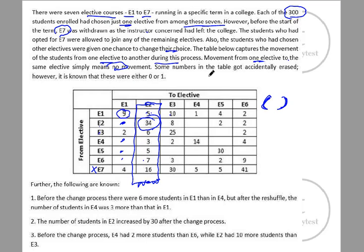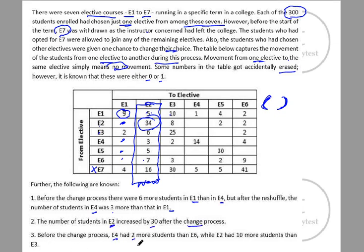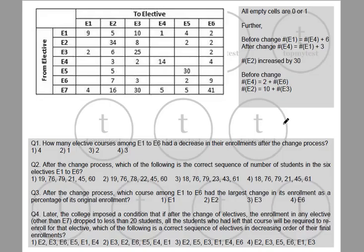Some numbers in the table were accidentally erased. However, it is known that these were either zero or one — they cannot be anything else. Further conditions: before the change, e1 had six more students than e4; after the reshuffle, e4 had three more than e1. The number of students in e2 increased by 30 after the change. Before the change, e4 had two more than e6, while e2 had ten more than e3.